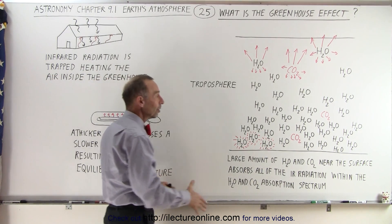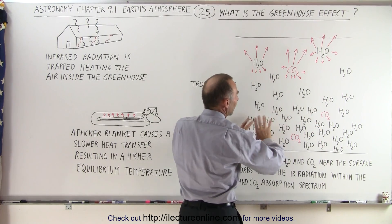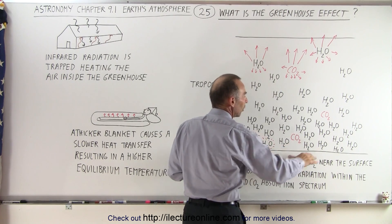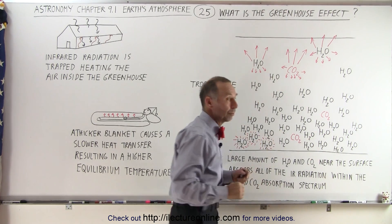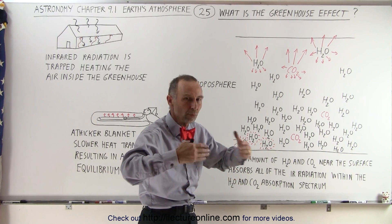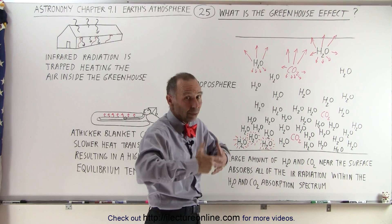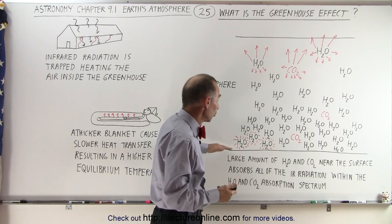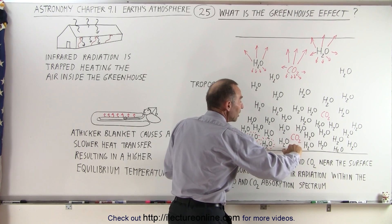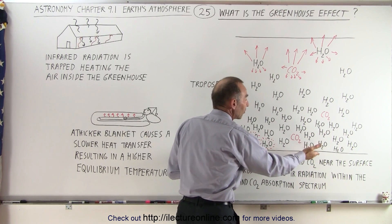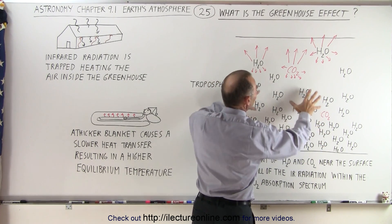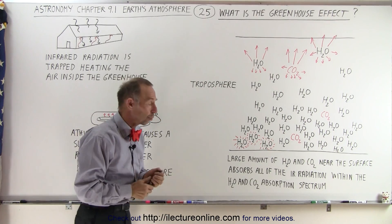Going back to the atmosphere: the slower we make this heat transfer happen — by having more greenhouse gases — the warmer it will stay here on the surface of the Earth, and the higher the equilibrium temperature. The warmer the surface of the Earth gets, the more heat radiation the surface will radiate, trying to get rid of that heat — that's the Stefan-Boltzmann concept. The temperature at which we reach equilibrium depends on how hot the surface temperature becomes and how much radiation is held back by the slow transfer of heat through the lower troposphere.